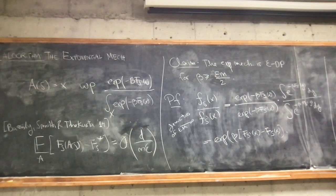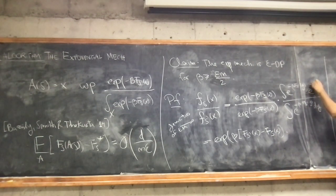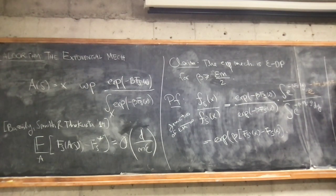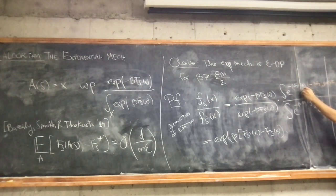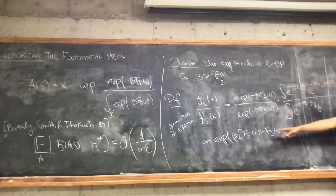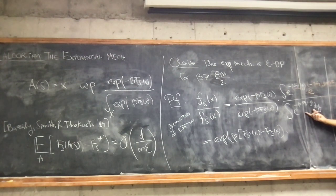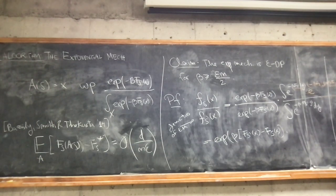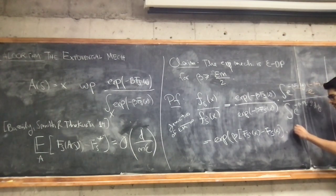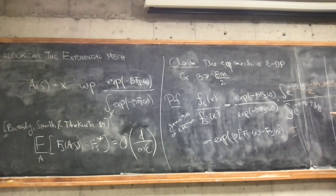We have a pretty explicit form for these densities. We get e to the minus beta F_S(x) over e to the minus beta F_{S'}(x), and then the normalizing factors: for the numerator it's the integral of e to the minus beta F_{S'}(y) dy, and in the denominator the integral of e to the minus beta F_S(y) dy. These two can be written as the exponential of a difference of functions. When you change the data set by one element, there's a single loss function which is different but all others are equal, giving the exponential of beta times (F_{S'}(x) minus F_S(x)).